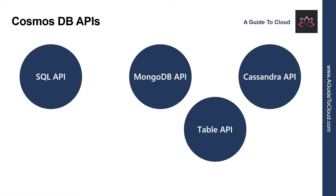Let's understand Cassandra API. Cassandra is a column family database management system. This is another database management system that many organizations run on-premises. The Cassandra API for Cosmos DB provides a Cassandra-like programmatic interface for Cosmos DB, and the Cassandra API requests are mapped to Cosmos DB document requests. As with the MongoDB API, the primary purpose of the Cassandra API is to enable you to quickly migrate Cassandra databases and applications to Cosmos DB.